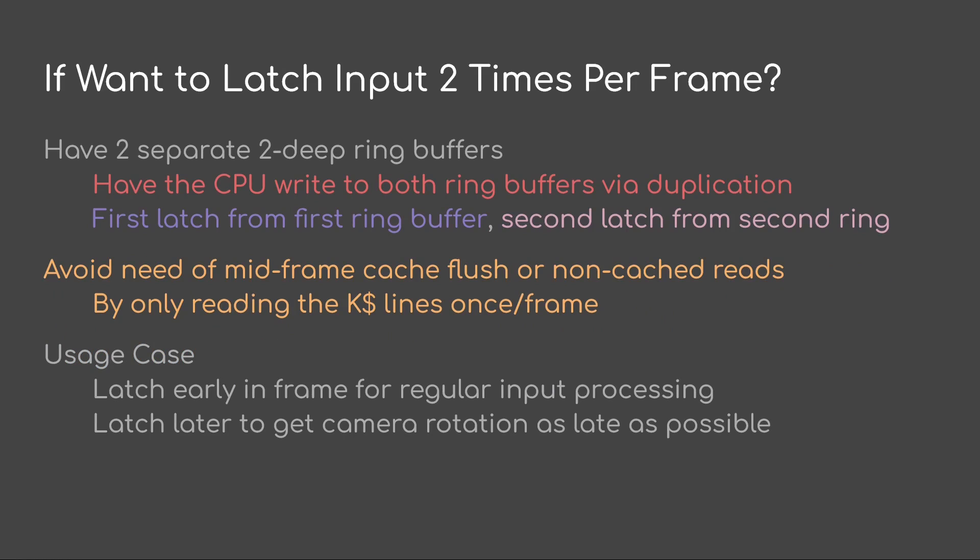Now if you want to late latch input two times per frame, what you do is have two separate 2D ring buffers and then have the CPU write to both ring buffers via duplication. This way the first latch reads from the first ring buffer, and the second time you latch on the GPU reads from the second ring buffer. This way you don't have to do any mid-frame cache flush or any non-cache reads — all you have to do is read the kcache lines once per frame and you know they're not going to be in the cache.